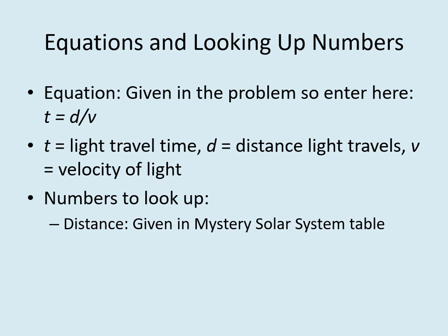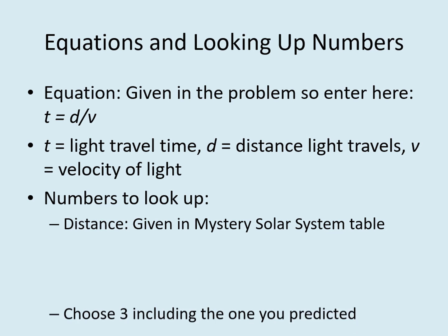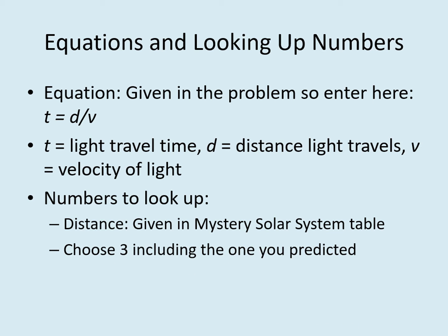Pick the three planets whose light travel time you want to calculate and put their distances in here. Remember to include the planet you predicted would have the longest light travel time back in part A. Next, what are we going to use for the velocity? The question gives us a hint: the beam of light travels at the speed of light. The speed of light is a universal constant, so you'll want to go look up the value. You can find the speed of light listed in lots of different sets of units, but I recommend you use kilometers per second — you'll see why in the next box.